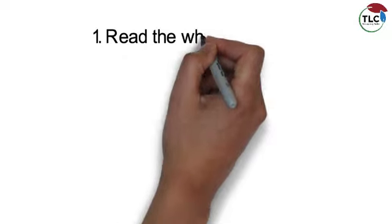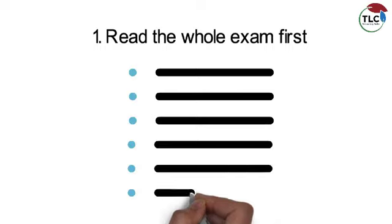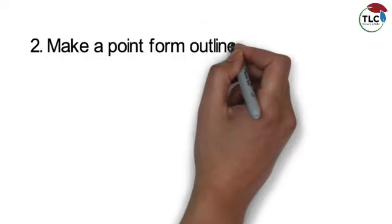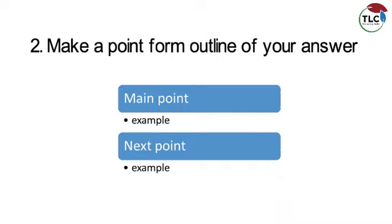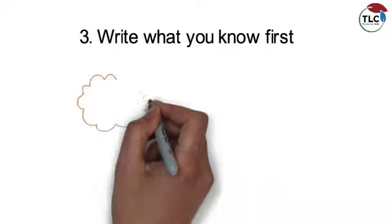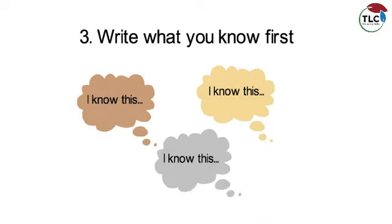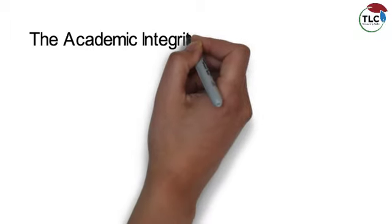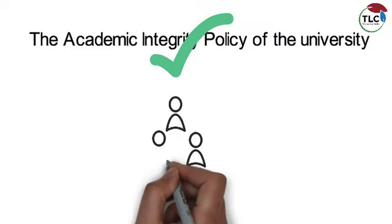Often questions on an open book exam ask for a paragraph or an essay length response. Here are some strategies for approaching these questions. First, read the whole exam. If you have a choice of questions, identify the questions that you feel you are able to answer the best. Two: make a point form outline of your answer before you begin to write. This will help you write the kind of well-organized answer that your instructor will be looking for. And third, write what you know first and use your materials to reference details or supporting information. Number four: remember that you must follow the academic integrity policies of the university. Unless your instructor specifically says otherwise, you cannot work together with another classmate on an open book exam.